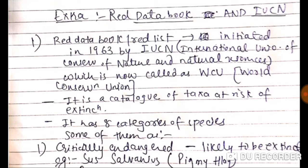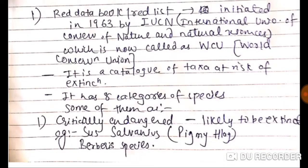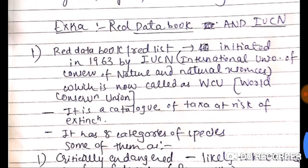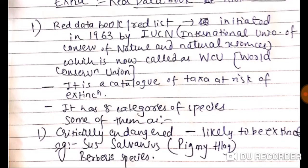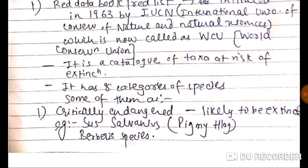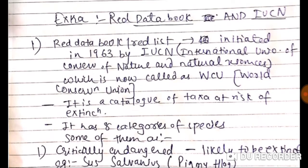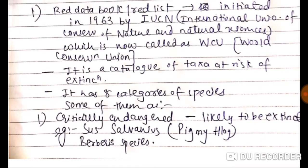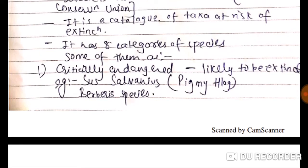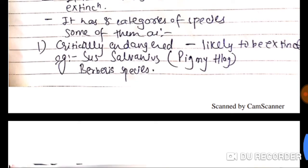An important extra topic for NEET is the Red Data Book and IUCN. IUCN stands for International Union for Conservation of Nature and Natural Resources, now also known as WCU (World Conservation Union). The Red Data Book or Red List was initiated by IUCN in 1963. It is a catalogue of taxa at risk of extinction and has about eight categories of species. Critically endangered species — likely to become extinct — include examples like Sos sylvanus, Pygmy Hog, and Barbary species.